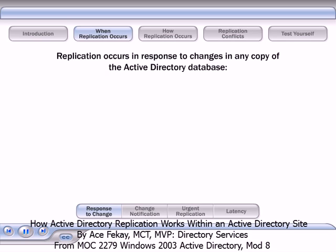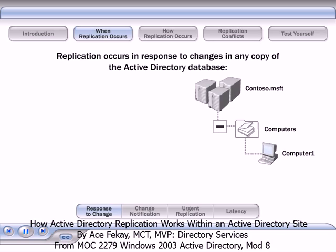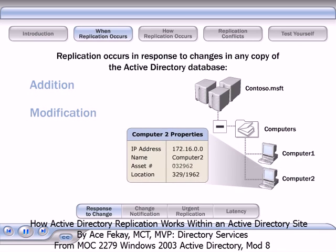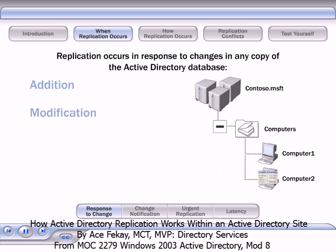Replication occurs in response to changes in any copy of the Active Directory database. Such changes can include the addition of an object to Active Directory, as when you create a new user or computer account, or the modification of an object's attribute values, as when you change the asset number on an existing computer account, or the change of the name of an object's container, as when you rename an organizational unit or move the object to a different organizational unit.